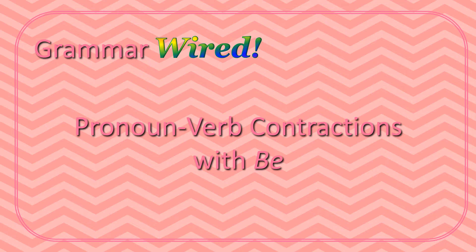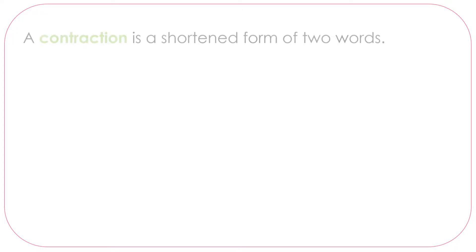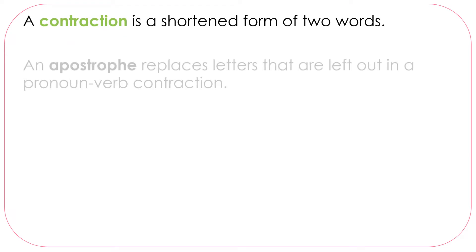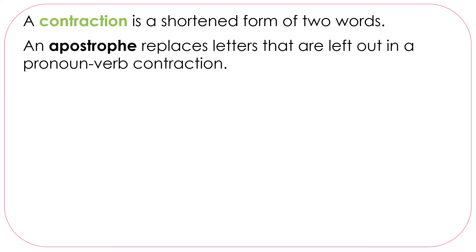Pronoun verb contractions with be. A contraction is a shortened form of two words. An apostrophe replaces letters that are left out in a pronoun verb contraction.